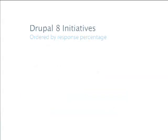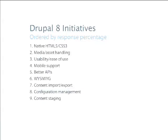In Drupal 8 we're calling these initiatives instead of killer features. Ordered by percentage, here's our new list. WYSIWYG has moved down the list quite a bit. Media and asset handling is still really high. HTML5 and CSS3 is something we weren't thinking about four years ago — it wasn't even on the list. Usability, ease of use, mobile support are again indicative of changes over the past four years. Better APIs are always in there, and new items include configuration management, content import/export, and content staging.